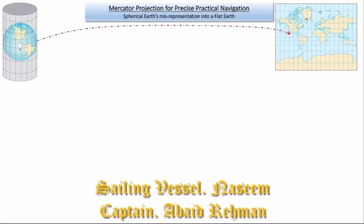This projection has orthomorphic properties, which means the land is in its correct shape. However, with the exception of right on the equator, the land areas increase as we move away from the equator. Here we can see that Greenland, which is an island, is showing much larger than South America, even though it is nine times smaller than South America.